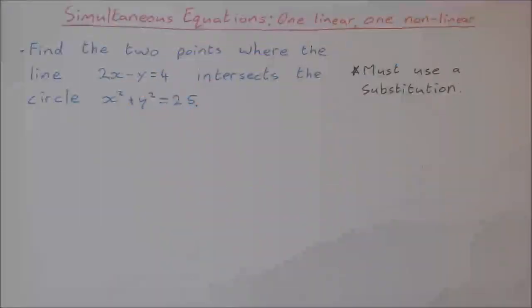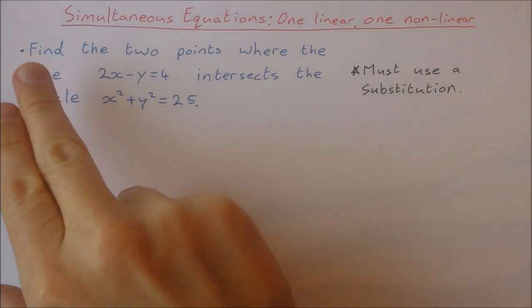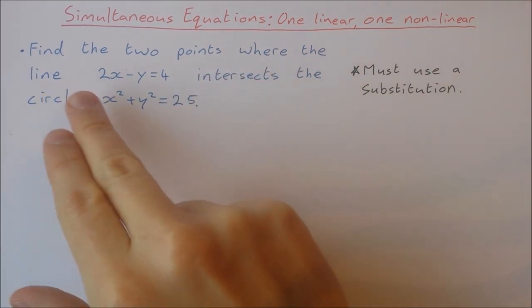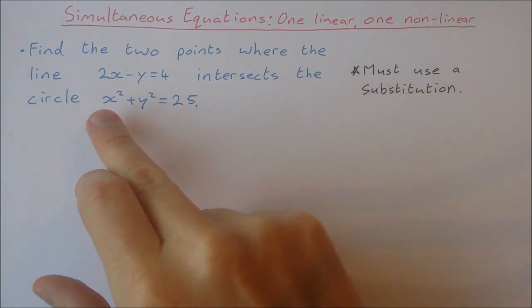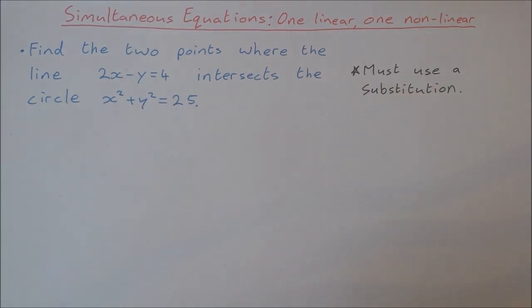In this video we're going to take a look at solving simultaneous equations, but in this case we have one linear equation and one non-linear equation. Find the two points where the line 2x minus y equals 4 intersects the circle x squared plus y squared equals 25.